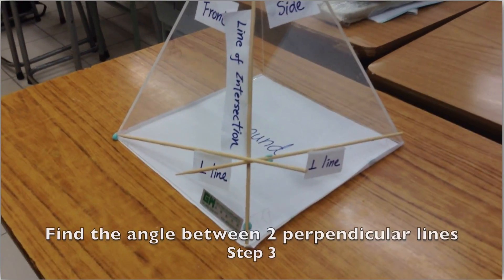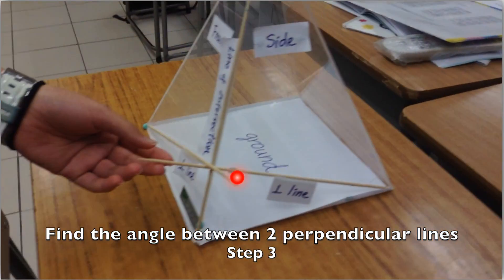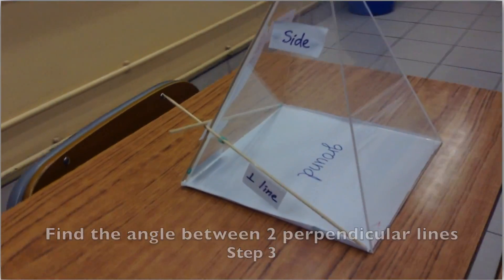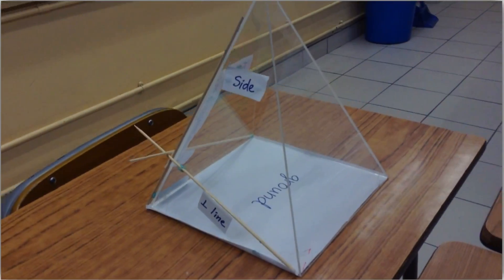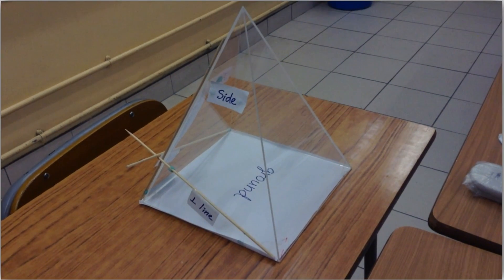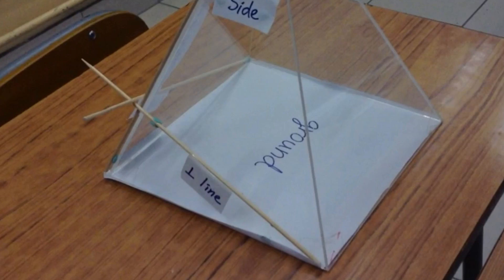And for step three, we have to find the angle between these two lines, these two perpendicular lines. And if we change the angle of the camera, these two lines will make an angle right here. This angle, theta, is the angle between the lateral faces of a pyramid.